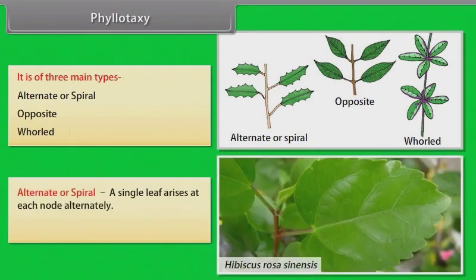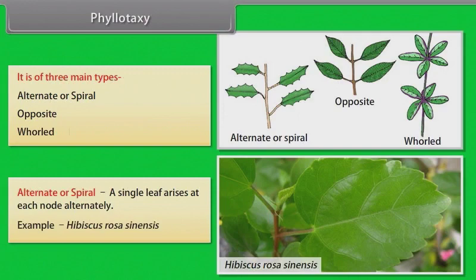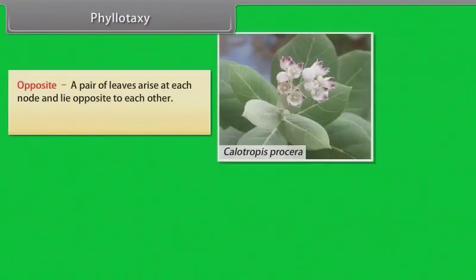Alternate or spiral: a single leaf arises at each node alternately. Example: Hibiscus rosa-sinensis. Opposite: a pair of leaves arise at each node and lie opposite to each other. Example: Calotropis procera.